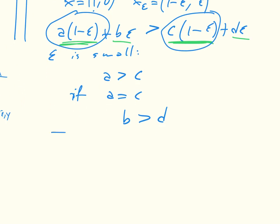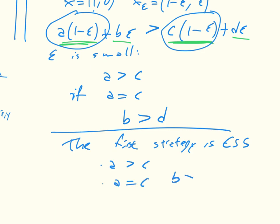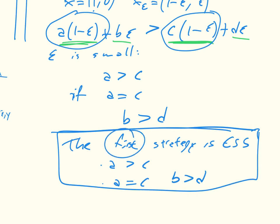And so then we can say the first strategy is ESS, and another way of thinking about ESS is that it's resistant to invasion. So what would happen if I have a population of the first strategy and I throw in some of the second strategy? Well, that's if a is greater than c, or a is equal to c and b is greater than d. And this notion is going to lead us to a general theorem for finding ESS, not just of the first strategy, but kind of of anything.